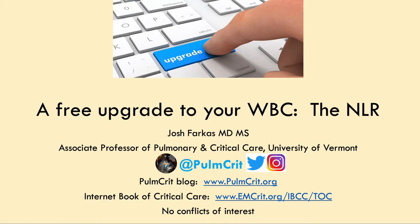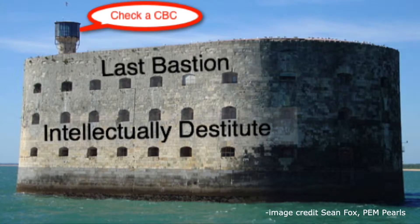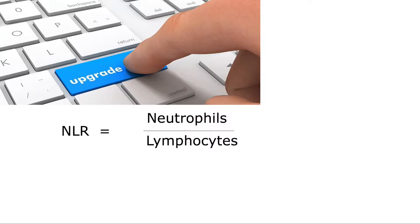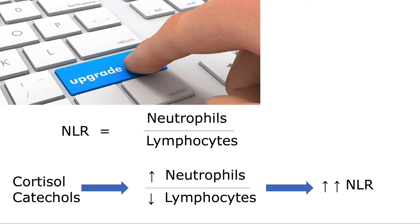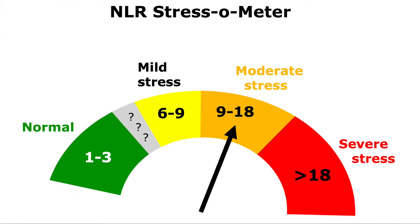Welcome to the POMCrit Double Minute on the NLR. We all know the white blood cell count is often misleading. The neutrophil to lymphocyte ratio is a free upgrade to the white blood cell count. Physiologic stress increases the neutrophil count while decreasing the lymphocyte count, causing the NLR to be fairly sensitive to stress.